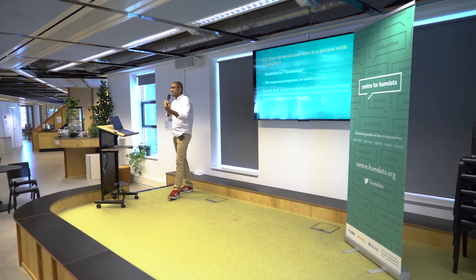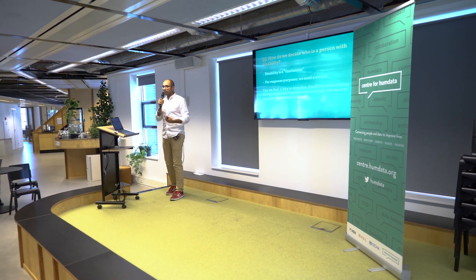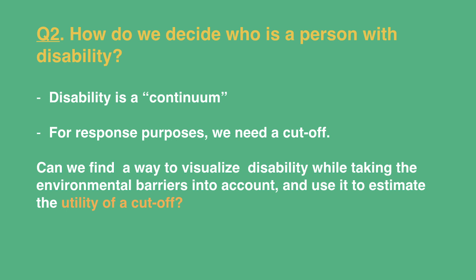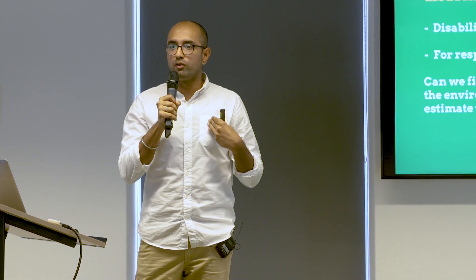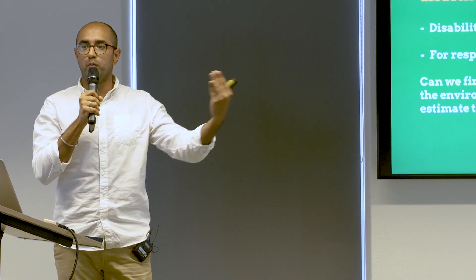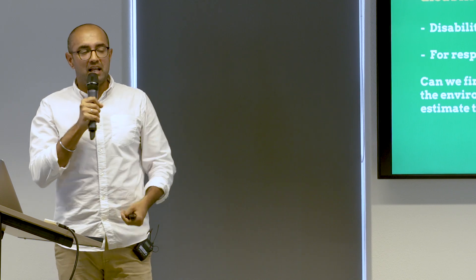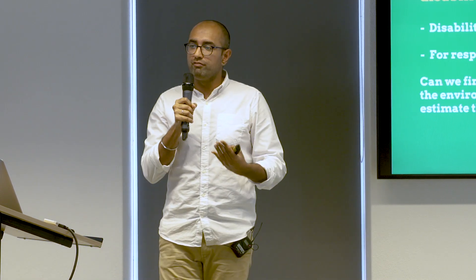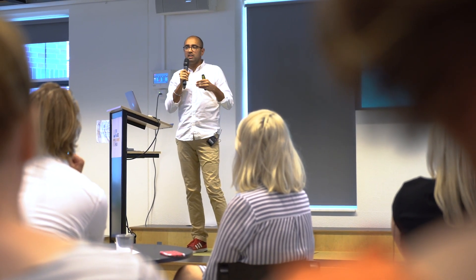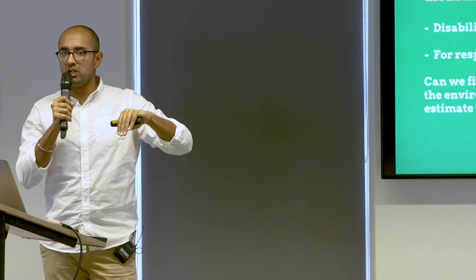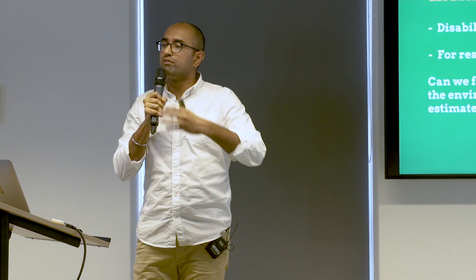That covers the relationship between functional difficulties and barriers in the environment. The second question is: how do we decide who is a person with disability? To answer this, we have to reframe the question. Everyone agrees that disability is a continuum. However, for reasons of response planning and targeting vulnerable populations, you need a cutoff. The Washington Group questions can be used to get a cutoff, but they are only about functional difficulties — they don't take the environment into context. So is there a way we can visualize the spectrum of disability while also taking environmental barriers into account, and then use this to estimate the utility of a chosen cutoff?